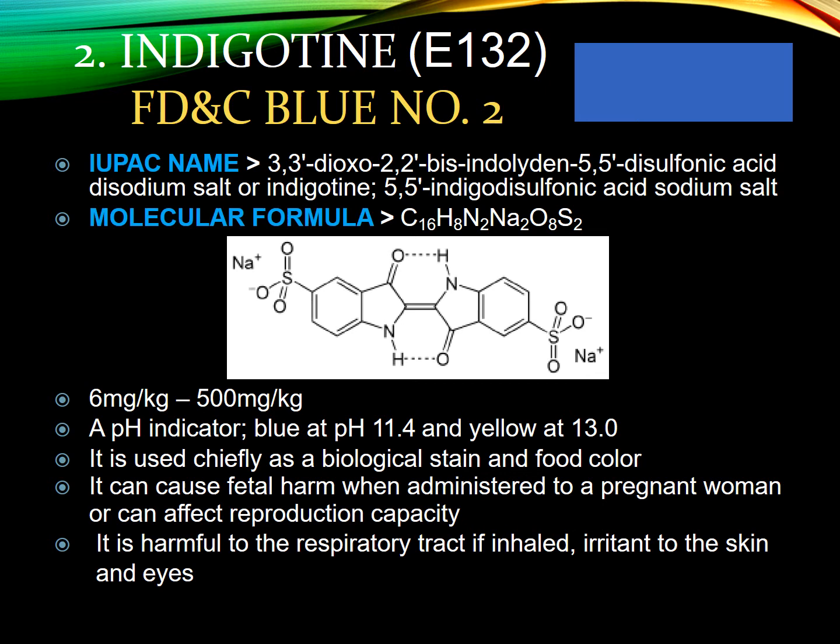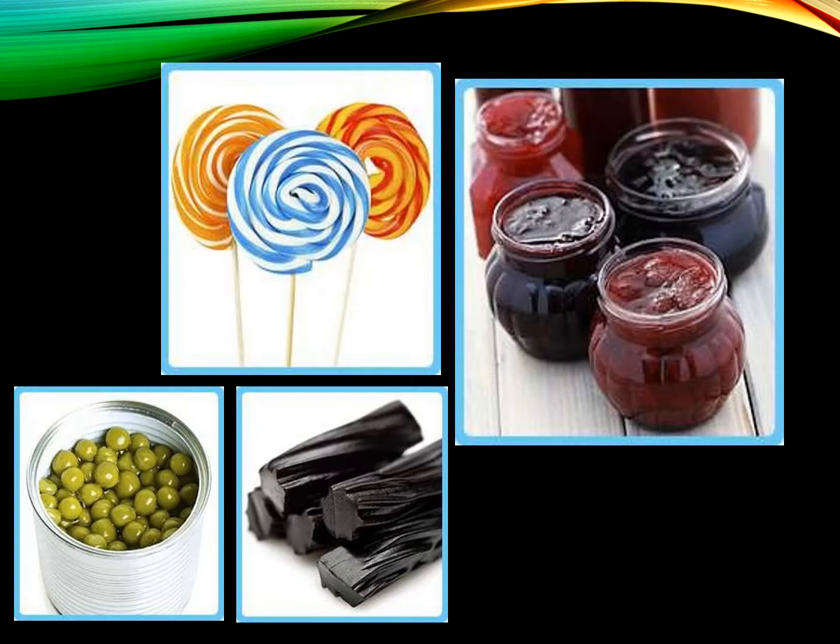Indigotine, FD&C Blue No. 2, is denoted by E132. The prescribed ADI is 6 mg per kg of body weight to 500 mg per kg of body weight. At pH 11.4 this compound gives blue color and at pH 13 it gives yellow color. It is used not only as a food color but also as a biological stain. It should not be administered by pregnant women as it is harmful to the fetus and affects reproductive capacity. It is also harmful to the respiratory tract if inhaled and causes irritation to skin and eyes.